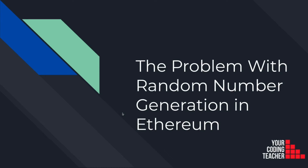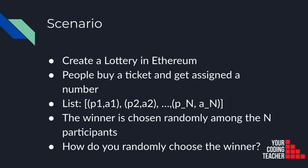In this video I am going to explain the problem with random number generation in Ethereum. Imagine you want to create a lottery in Ethereum. People can buy a ticket and they get assigned a number. Our contract keeps a list of the participants and their addresses, and the winner is chosen randomly among the n participants. To choose a winner we need to pick at random one of our participants, which is equivalent to choosing at random one position in this list. The question is how do you generate a random number to choose the winner?